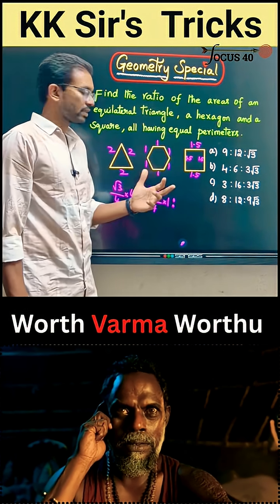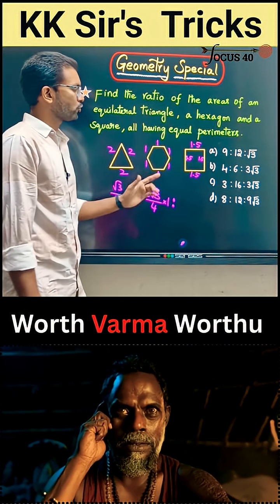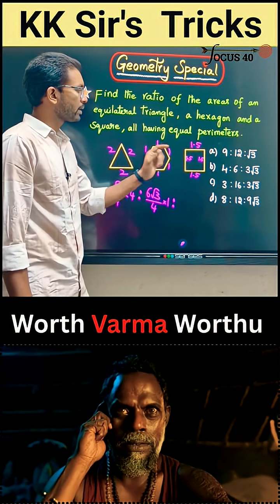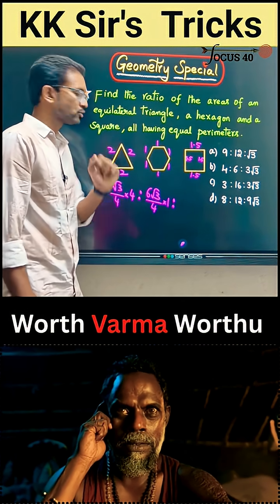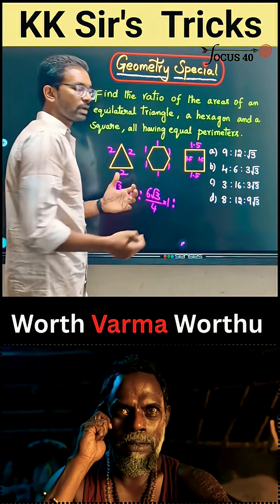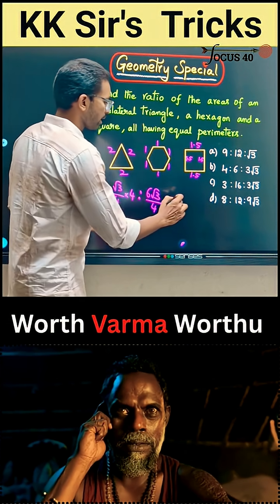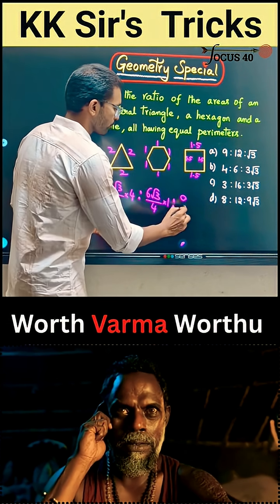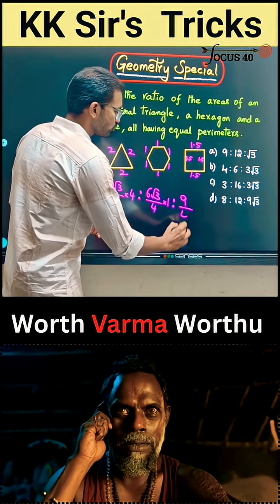The area of the square with side 1.5 is (3/2)² = 9/4. Now finding the ratios and simplifying: taking 1/4 as a common factor and canceling terms including √3.